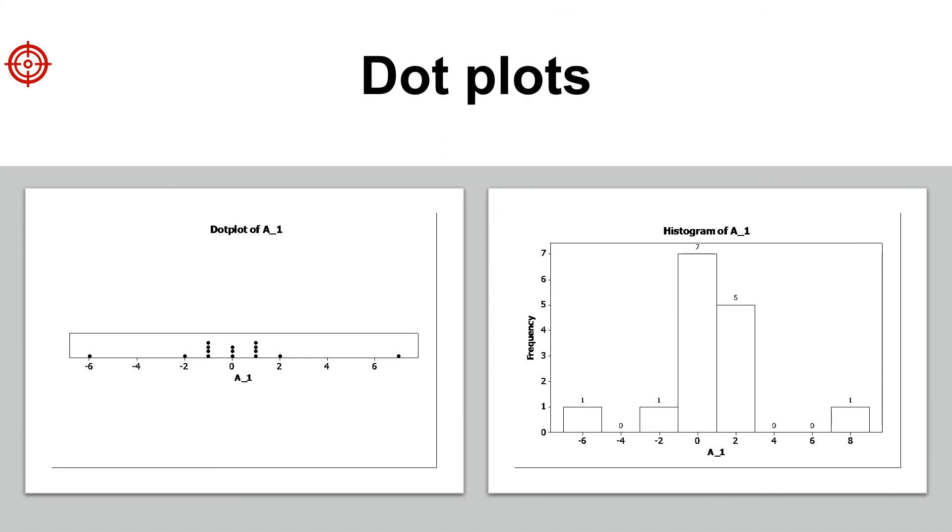With larger data sets, each dot can represent more than one data value. The dot plot is especially useful for displaying small to moderate amounts of numeric data. The dot plot lets us look at individual data values with more precision.